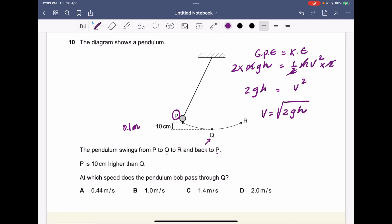To calculate the speed at point Q, v equals square root of two times the acceleration due to gravity or the gravitational field strength, which is 10, times the height which is 0.1.